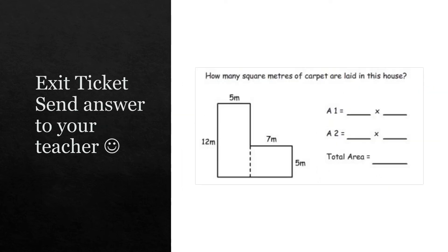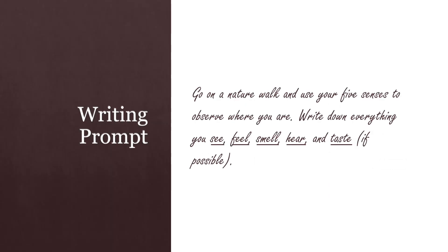Let's go ahead and I have an exit ticket for you. Send your answer to your teacher. This one is saying how many square meters of carpet are laid in this house. So area is a good way to remember kind of like carpet or tile or flooring. It's what's on the inside and that's what we're trying to figure out. When you figure this one out, send a picture to your teacher. Good luck.